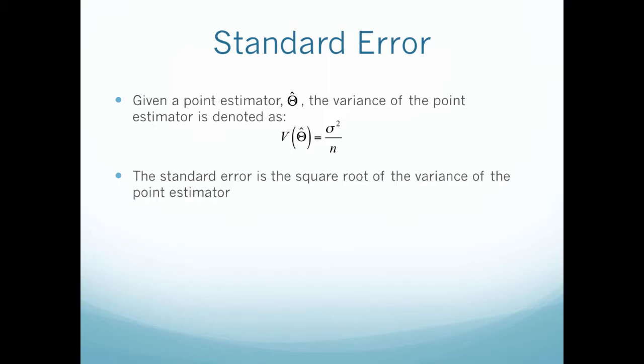My standard error this time is just the square root of my variance. Standard error is just the standard deviation of these point estimates, so sigma over the square root of n.